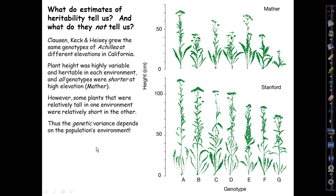So the genetic variance depends on the population's environment. The amount of variation and the identities of the taller and shorter phenotypes differ depending on where the plants are grown. That's G by E interaction. And likewise, the environmental variance depends on the population's genes. The degree to which you would get variation at Mather or at Stanford would depend on which genotypes you included.